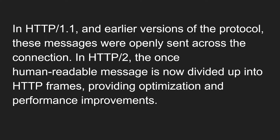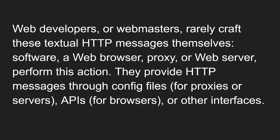In HTTP 2, messages are divided into frames and sent, providing optimization and performance improvement. Whereas in HTTP 1.1 or earlier versions, messages are openly sent between the connection. Now, when making a request to the server, we need to send a request message, and the server returns back a response message. So how can we frame this request message?